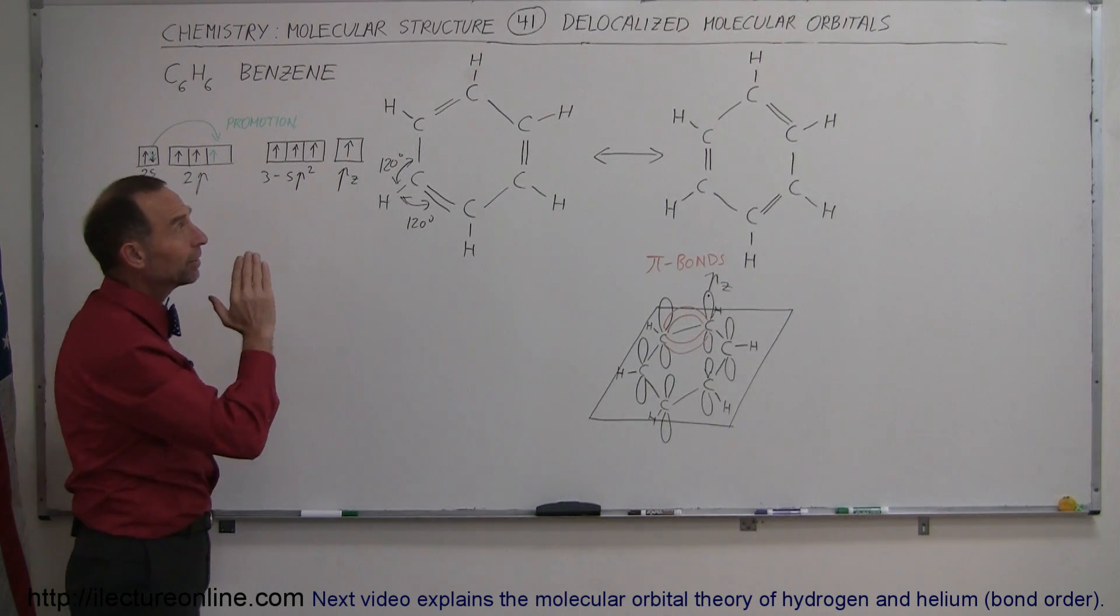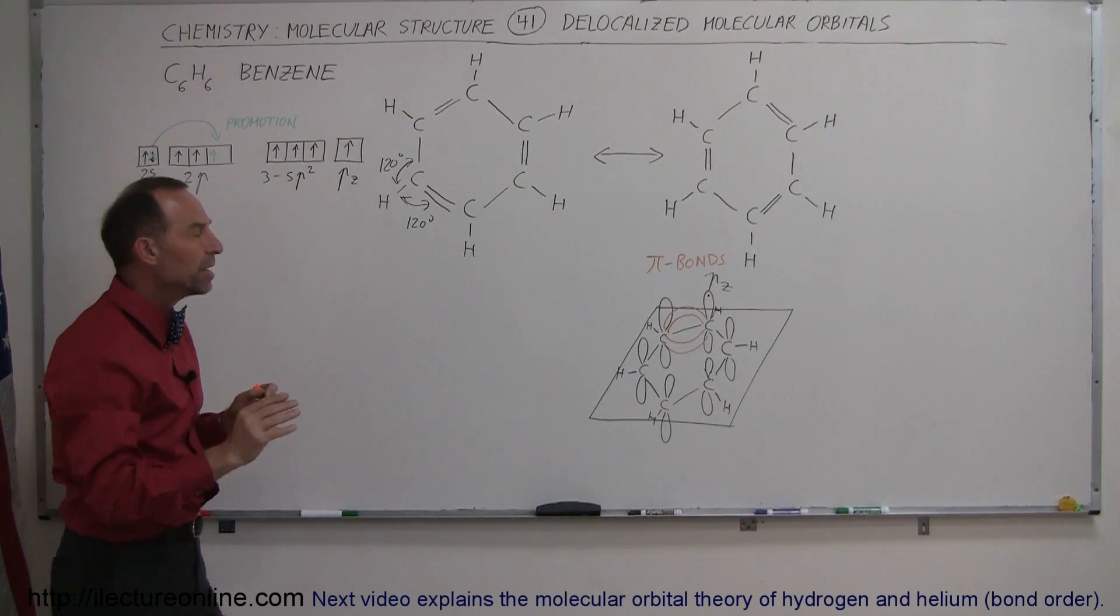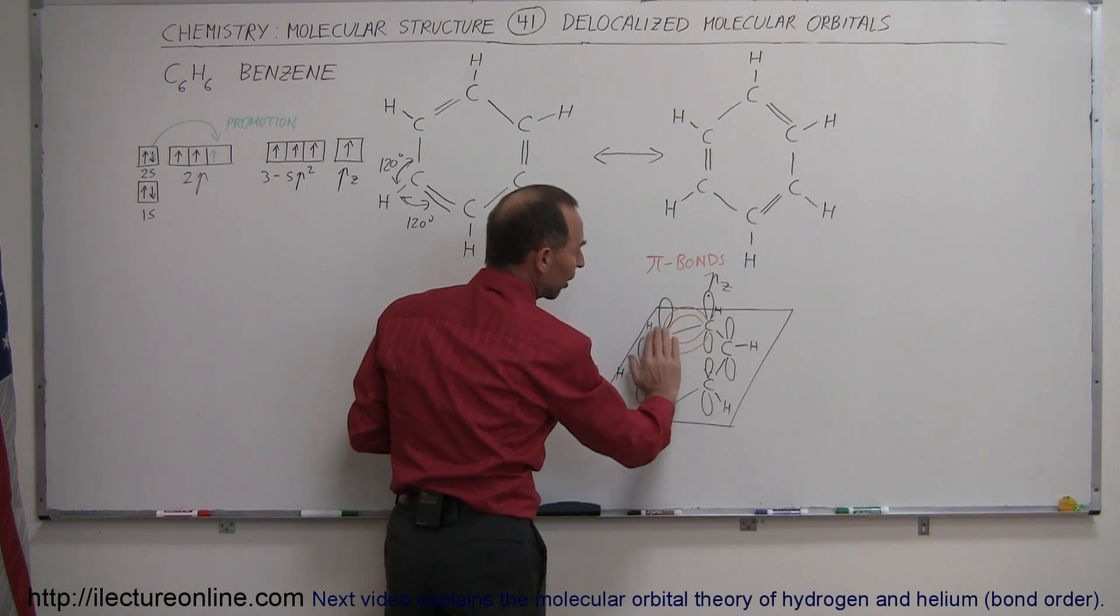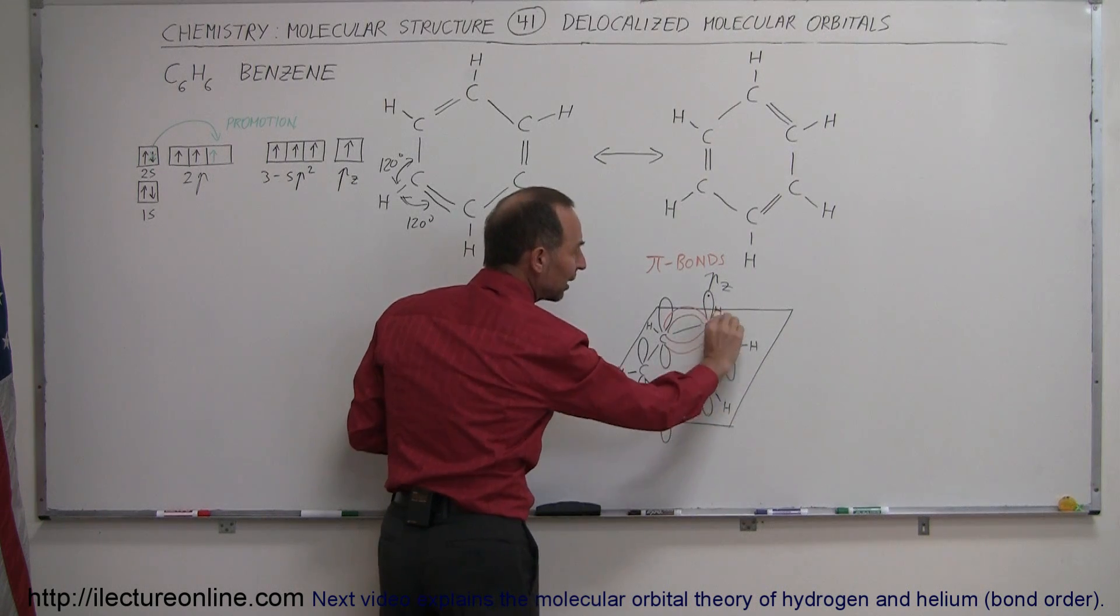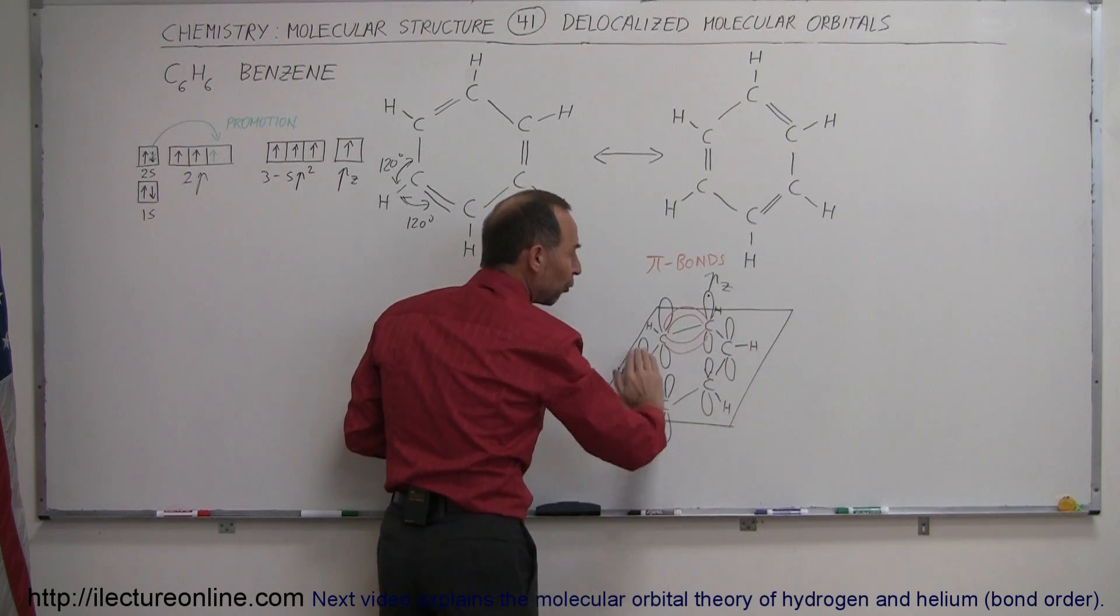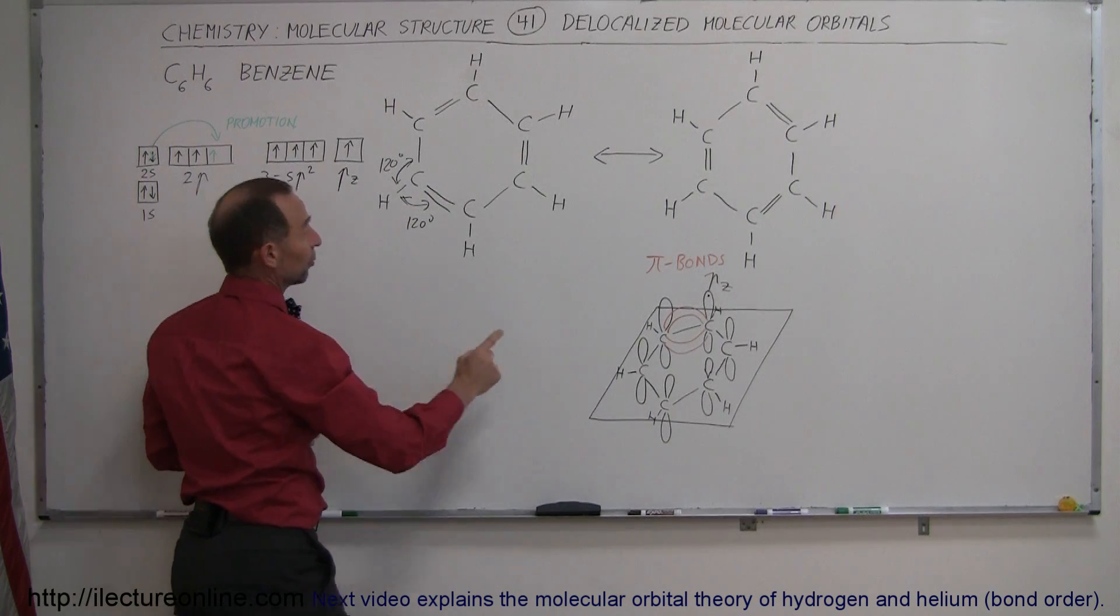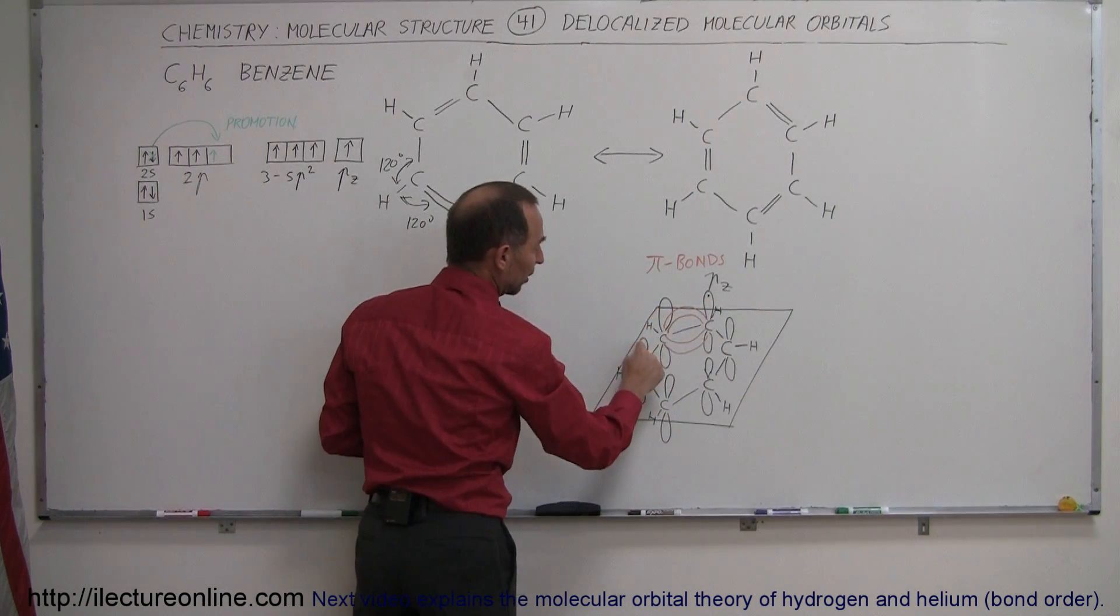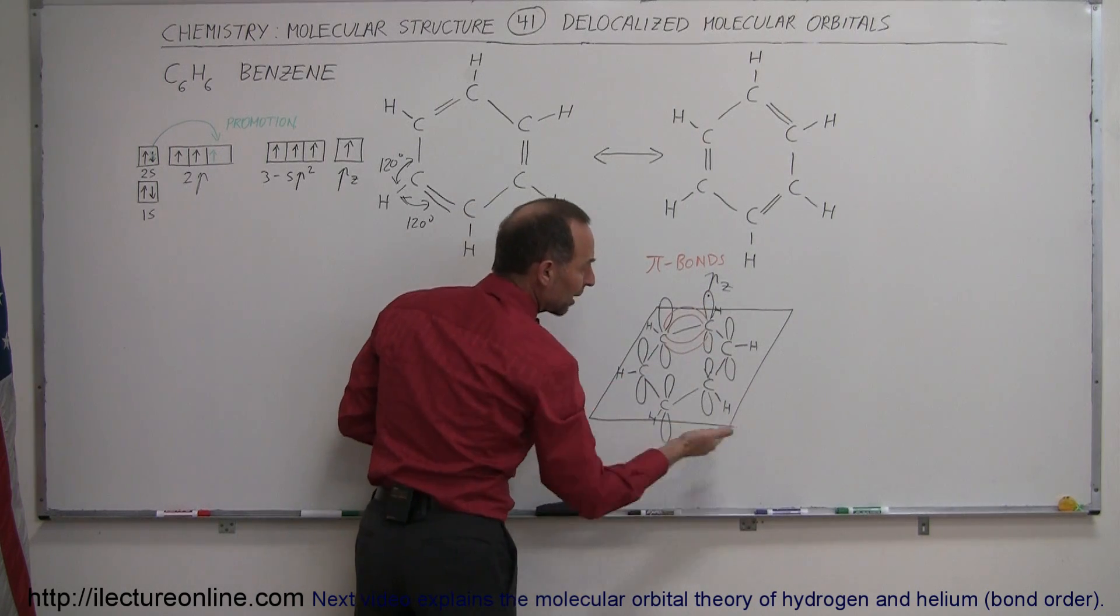What really is happening is that there's what we call a delocalization of the pi bonds, which means that the pi bonds will begin to reach out and instead of going from one carbon to the next carbon, they basically reach out and go over two or three or four carbons. So each of these p orbitals will stretch out and form a layer above the carbons where the three free electrons remain above the plane, and then the other three that will remain below the plane.